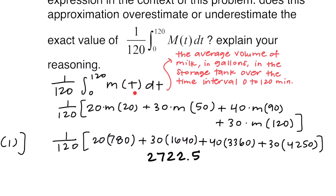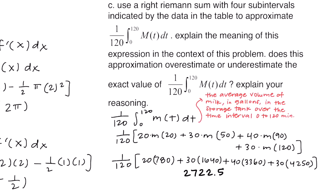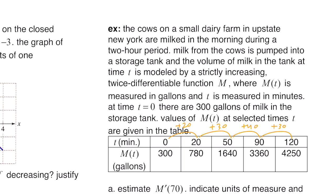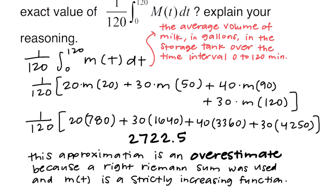The meaning of this expression is the average volume of milk in gallons in the storage tank over the time interval from 0 to 120 minutes. This approximation is an overestimate because a right Riemann sum was used, and m of t is a strictly increasing function. Thanks so much for watching!